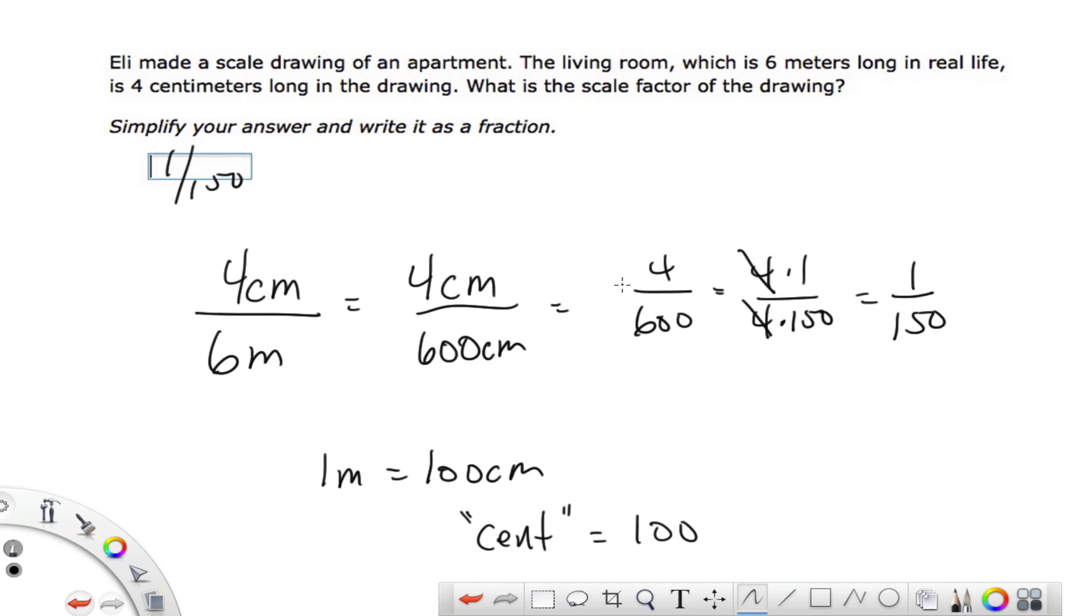Again, this one went a little faster than the last one, but the process is the same. We set up our ratio, and then we make sure the units are the same. In this case, when we're trying to find the scale factor, you want the units to be the same, which means you have to do some conversion.